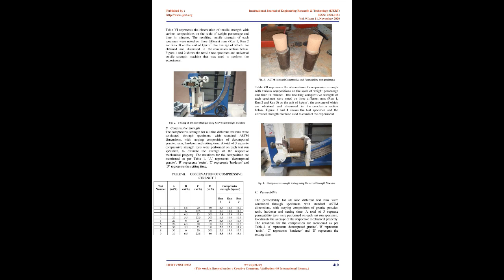About 1 kilogram of silica sand is weighed and added in the sand muller along with the measured quantity of resin, hardener and decomposed granite. The quantity and proportion of the resin, hardener and decomposed granite varies for each group of the total analysis. The variation is done on the basis of the experimental design matrix as shown in Table 3.